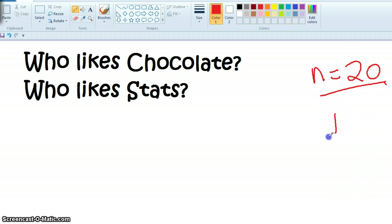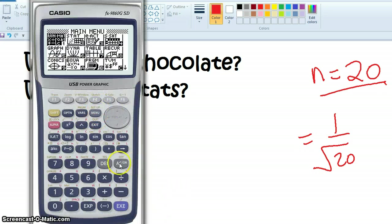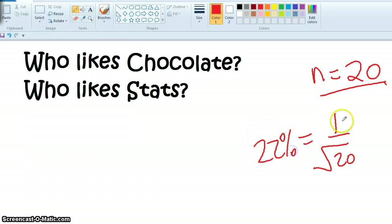What's our margin of error? So 1 over the square root of 20. Okay, so I'm going to endeavor to actually work that out. So 1 divided by the square root of 20, and if I times that by 100, I get 22.3%. I'm going to call that 22%. That's timesing it by 100 to give it as a percentage.